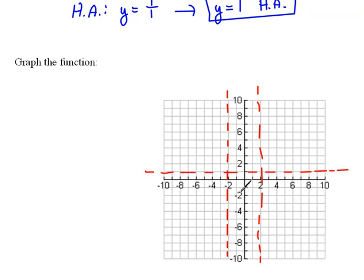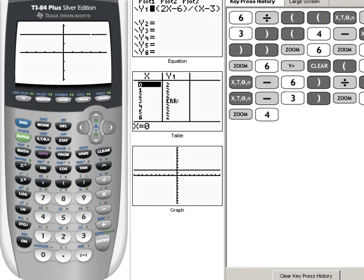And we know we had a horizontal asymptote at y equals 1, which is right here. We just really need to know what's going on around here. So now would be a good time to go to our calculator.